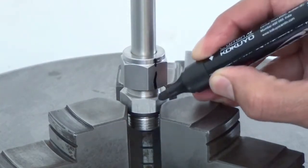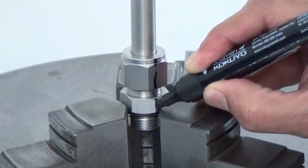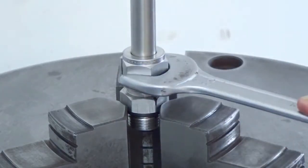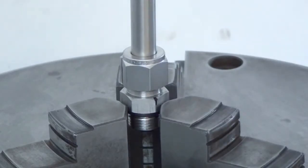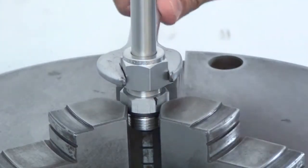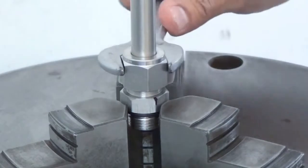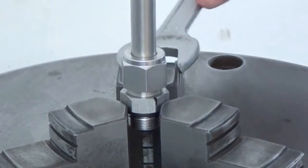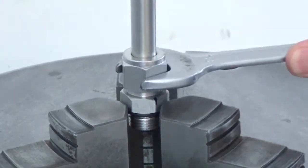Step 2: Mark the nut at the 6 o'clock position. Step 3: Using the wrench, tighten the nut 1 and 1 quarter of a turn until the mark reaches the 9 o'clock position.